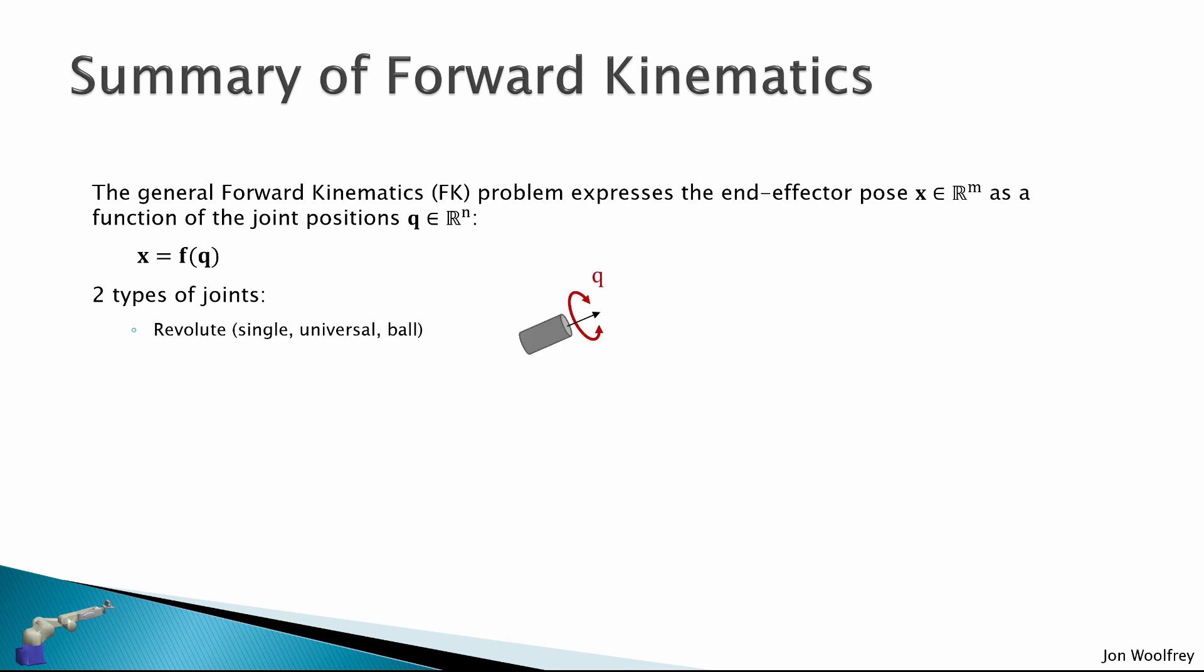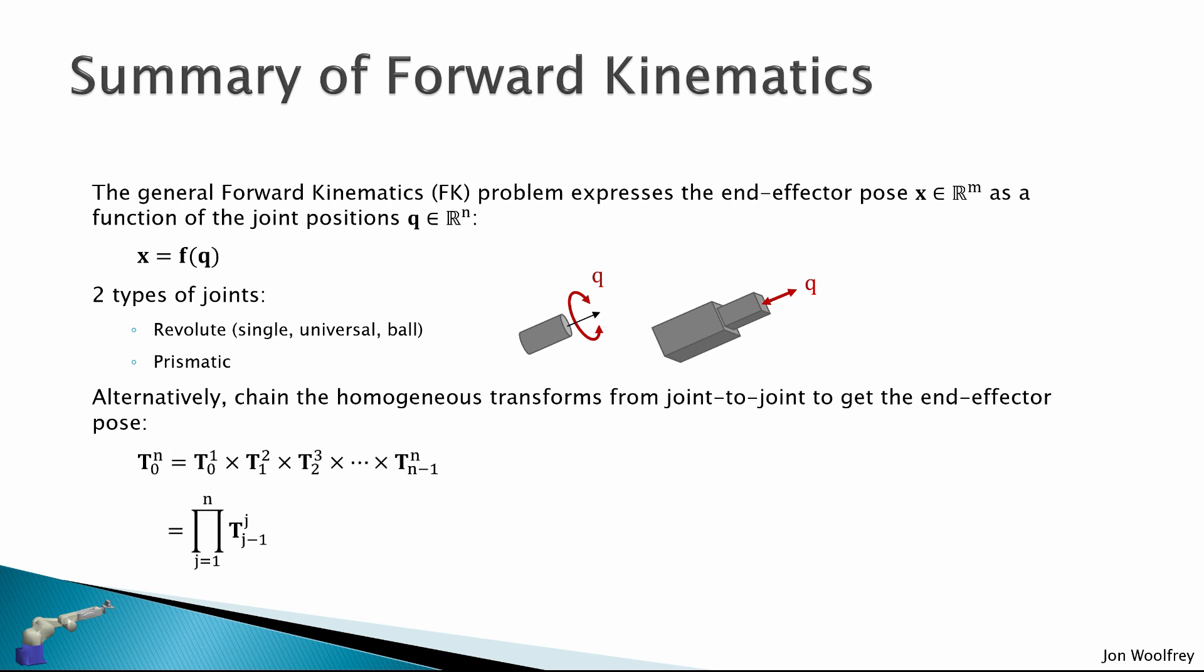The revolute joint, which we can expand to give single 1-DOF joints, 2-DOF universal joints and 3-DOF ball joints, and the prismatic joint, which translates, not rotates. Alternatively, we can chain the homogeneous transforms from joint to joint to get the end effector pose. That is, we take the transform of J minus 1 to J from frame 0 to frame N to get the end effector pose.